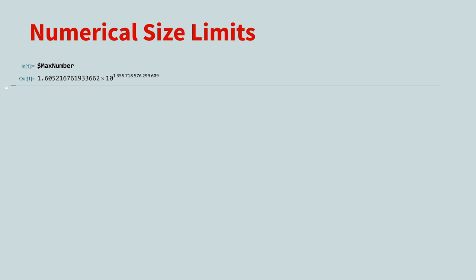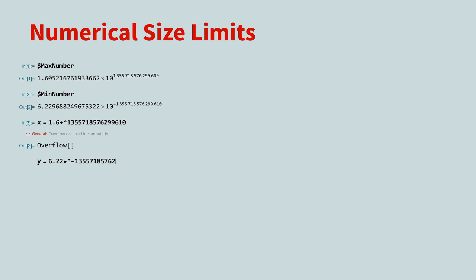And to find the minimum possible number, enter $min number. If you try to enter a number larger than $max number, Mathematica will output an overflow. And if you try to enter a number smaller than $min number, Mathematica will return an underflow.